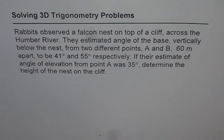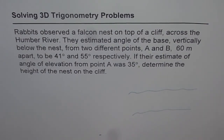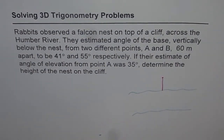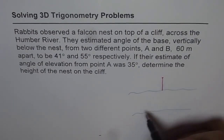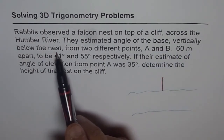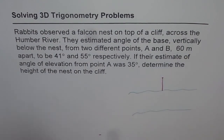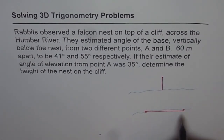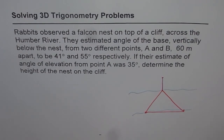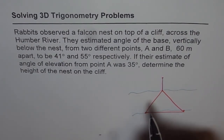Let's make a diagram to represent the situation. Here we have the river, and across the river there is a cliff on which we have a nest where sits our falcon. Now the rabbits are very conscious about it and they do some measurements. They estimated the angle to the base vertically below the nest from two different points A and B, 60 meters apart. These are the two different points, and from these points the angle to the base of the cliff is being measured — 41 degrees and 55 degrees respectively.